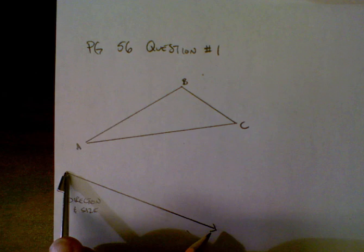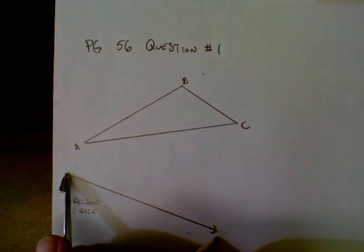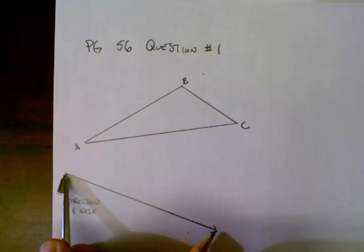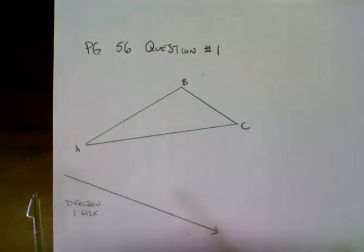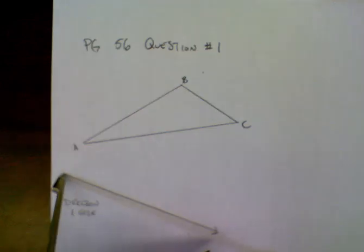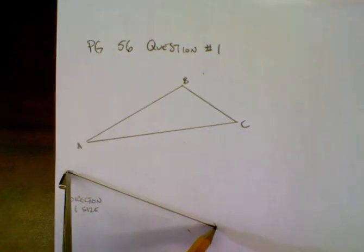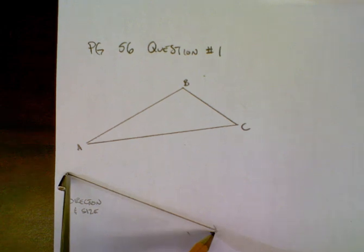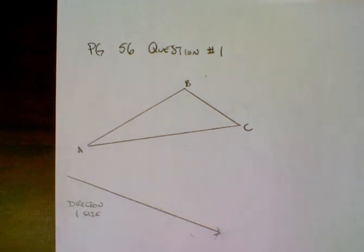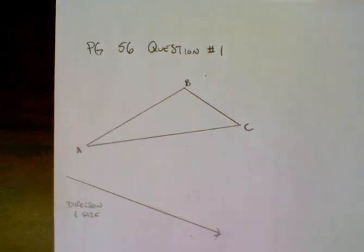The first thing we do is take the size of the arrow, which shows us our translation — that's the distance we have to move our figure. Put the point on the back of the arrow and the pencil on the front of the arrow to get a measure of the actual distance that we will be moving points A, B, and C.